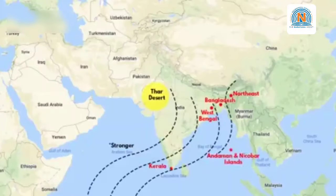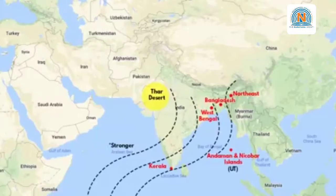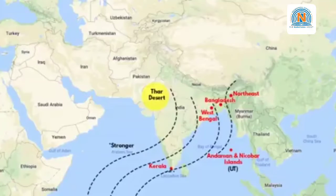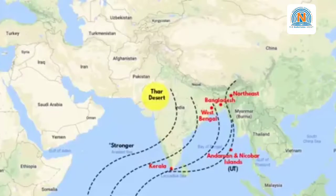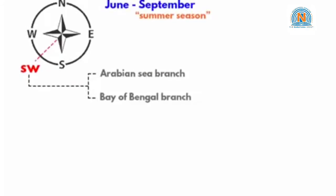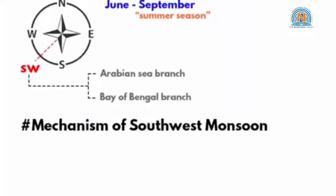And the territory of the Andaman and Nicobar Islands is the first Union territory to receive southwest monsoon rain. Because if you look at the pattern of the southwest monsoon winds, as soon as the winds hit the southernmost tip of the Indian subcontinent, a good amount of these high-velocity winds travel over the open regions of the Lakshadweep Sea and hit the territory of Andaman and Nicobar Islands first.